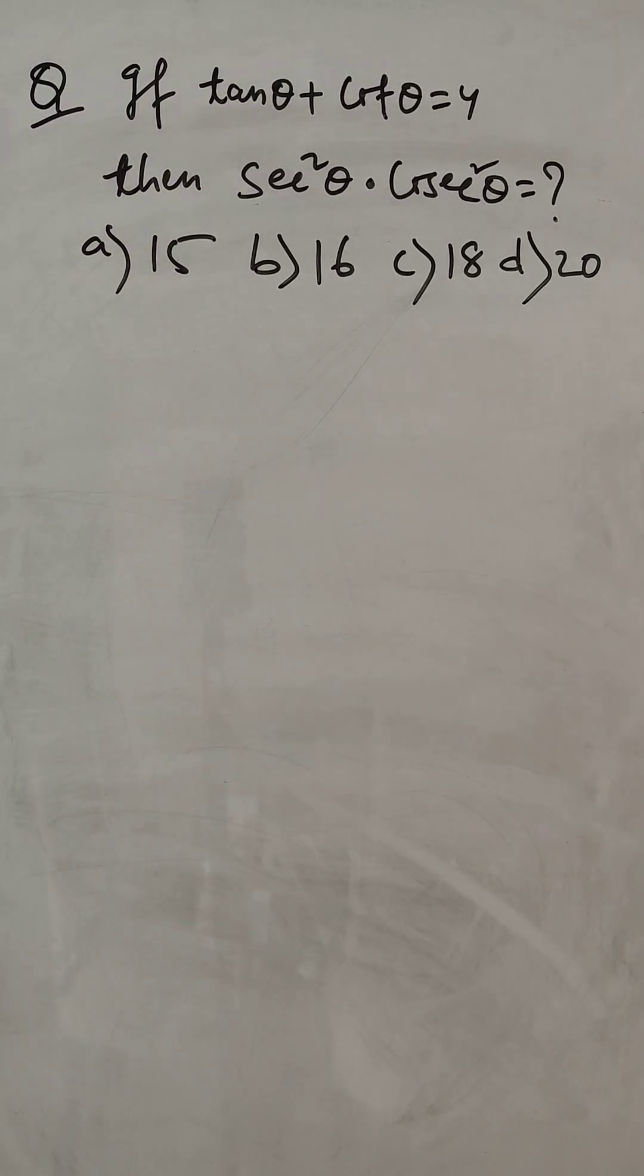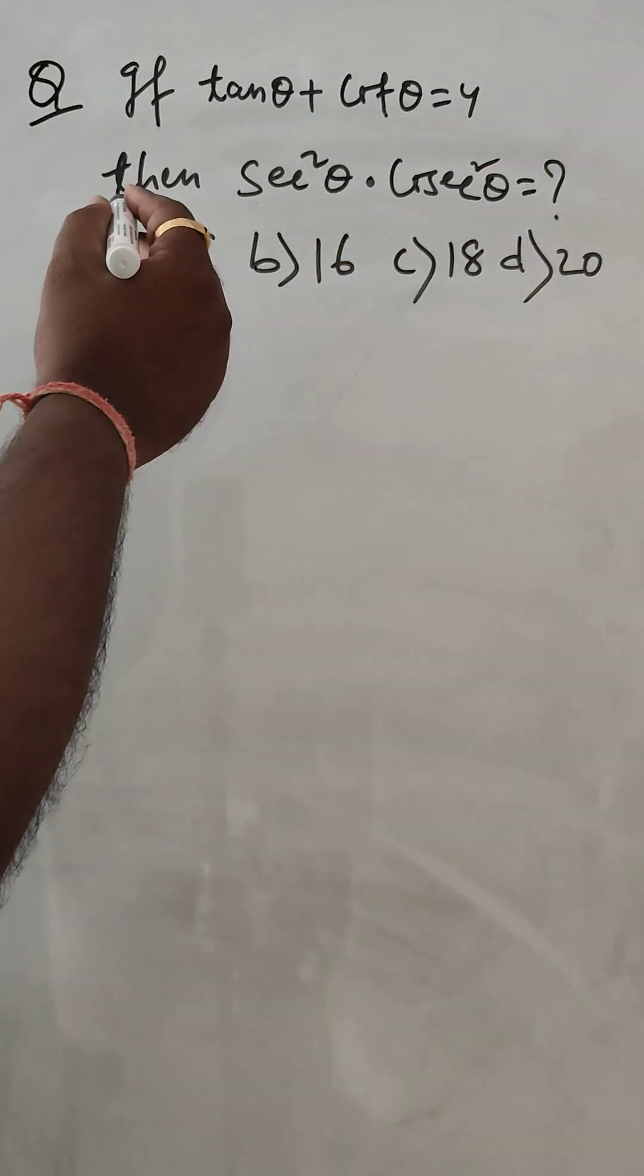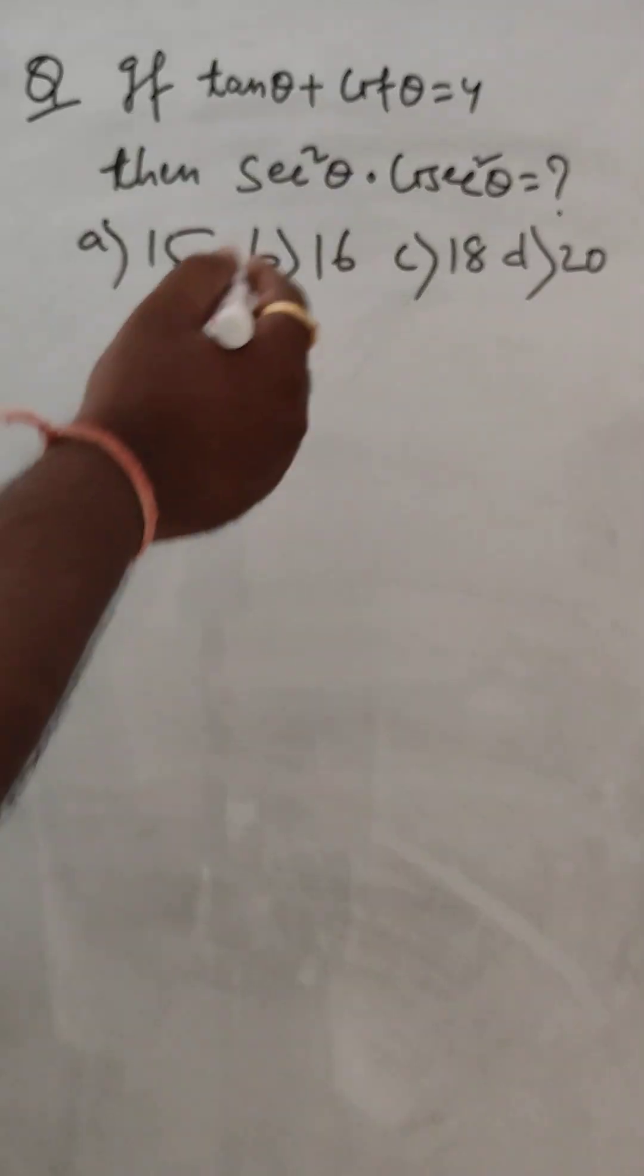Hello, hi everyone. So we are going to solve another problem in trigonometry where if tan theta plus cot theta is equal to 4, then sec square theta into cosine square theta is equal to what. So this is also one of the easiest problems.